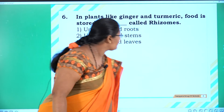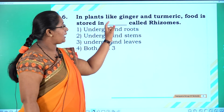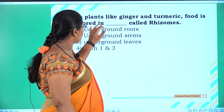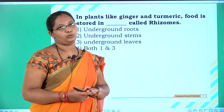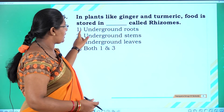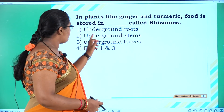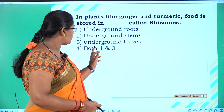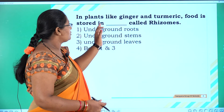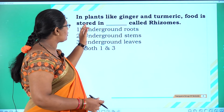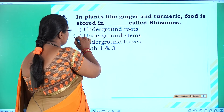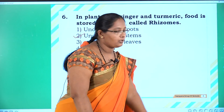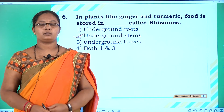Sixth question: In plants like ginger and turmeric, food is stored in ___ — these are called rhizomes. Options: one underground roots, two underground stems, three underground leaves, four both one and three. In ginger and turmeric, food is stored in underground stems, so the answer is option two. These are all the questions in this assignment. Thank you.